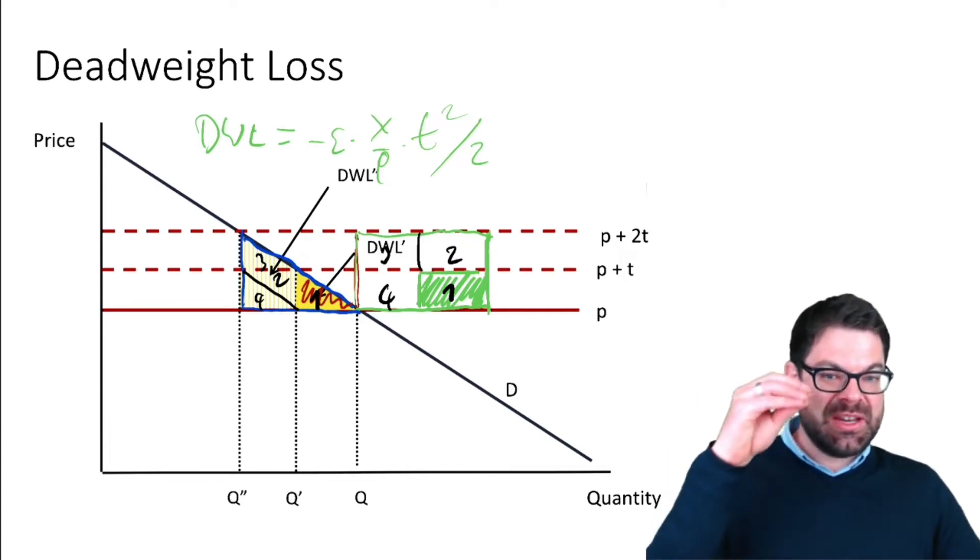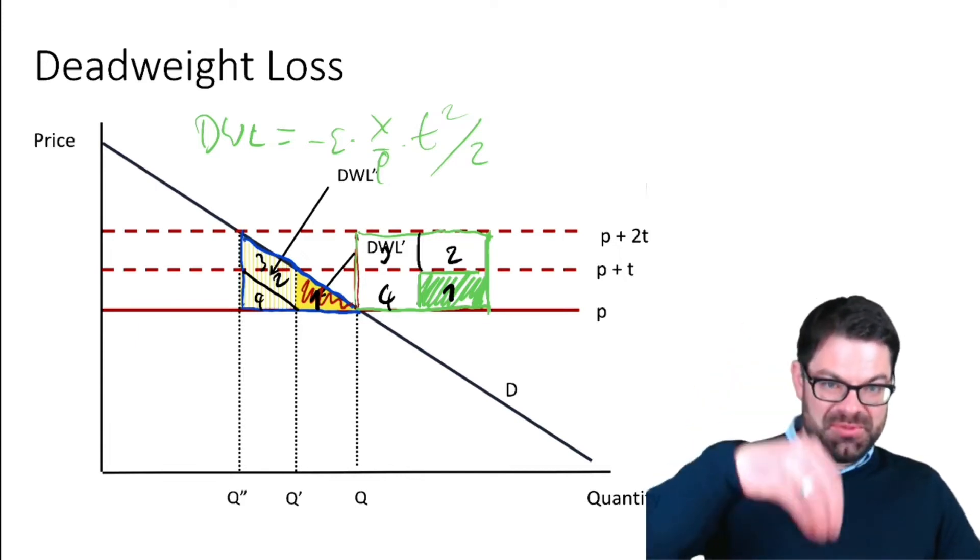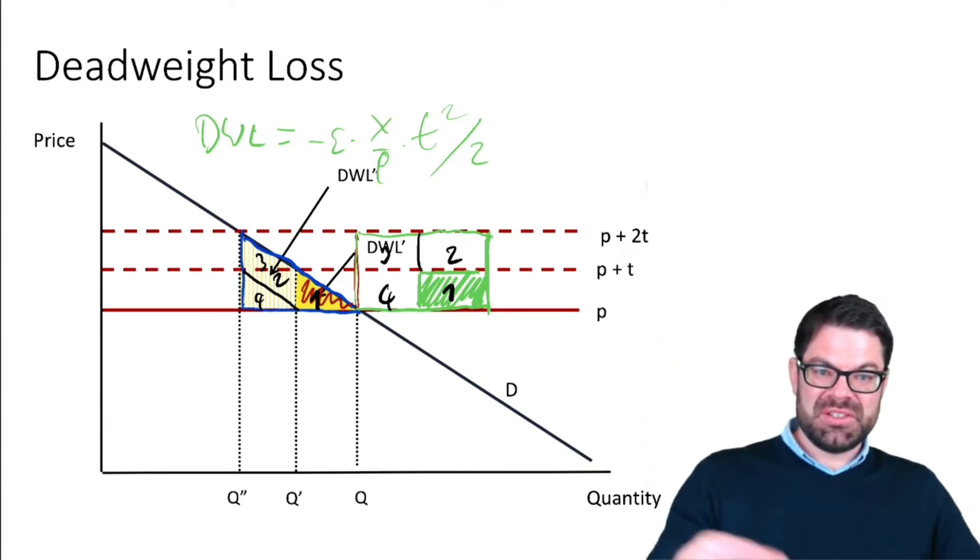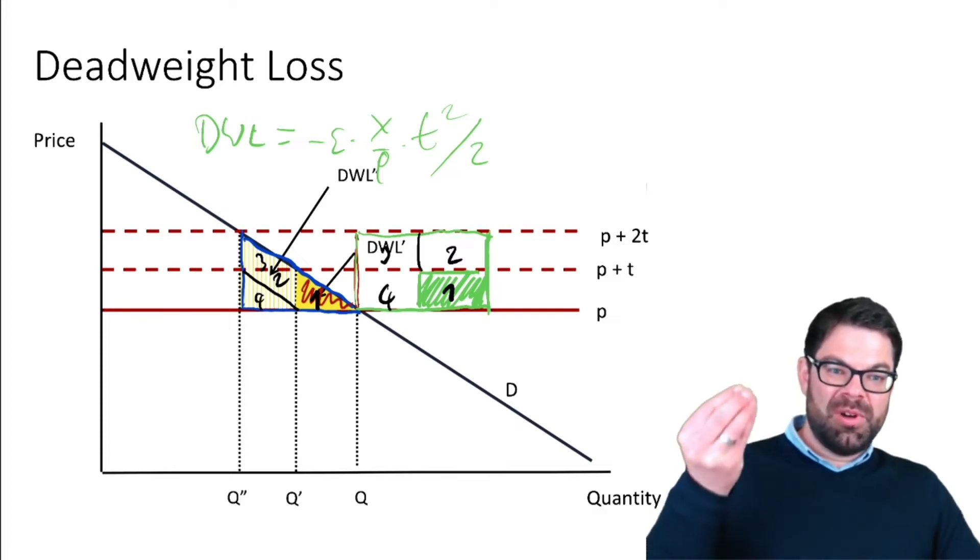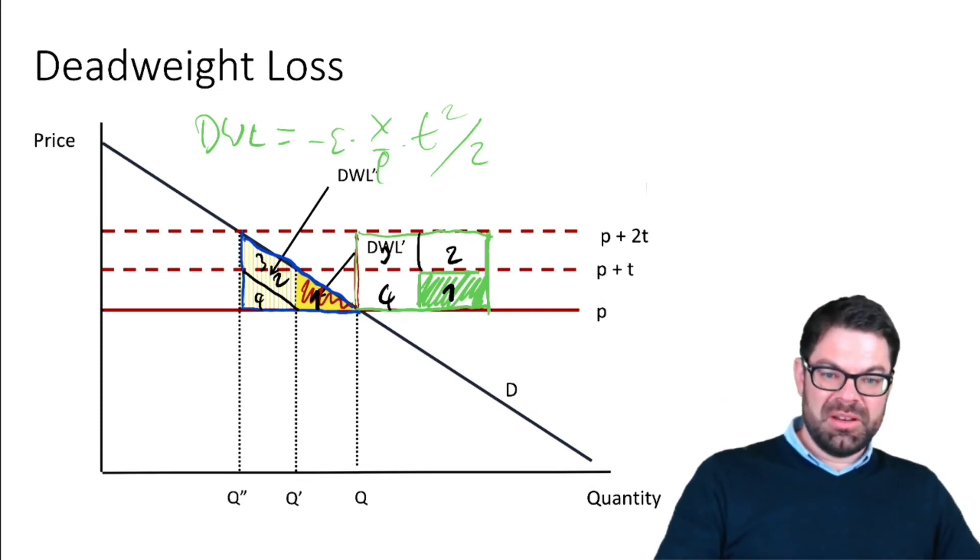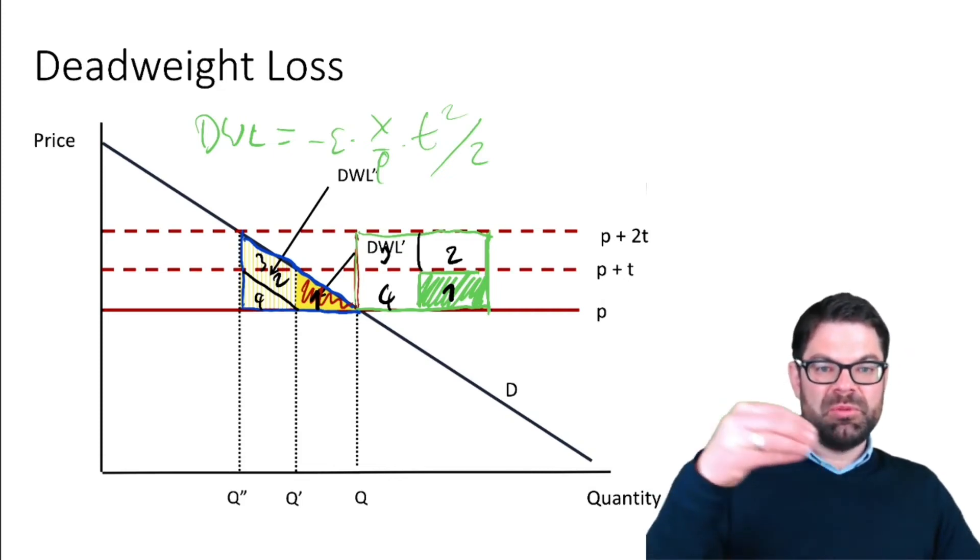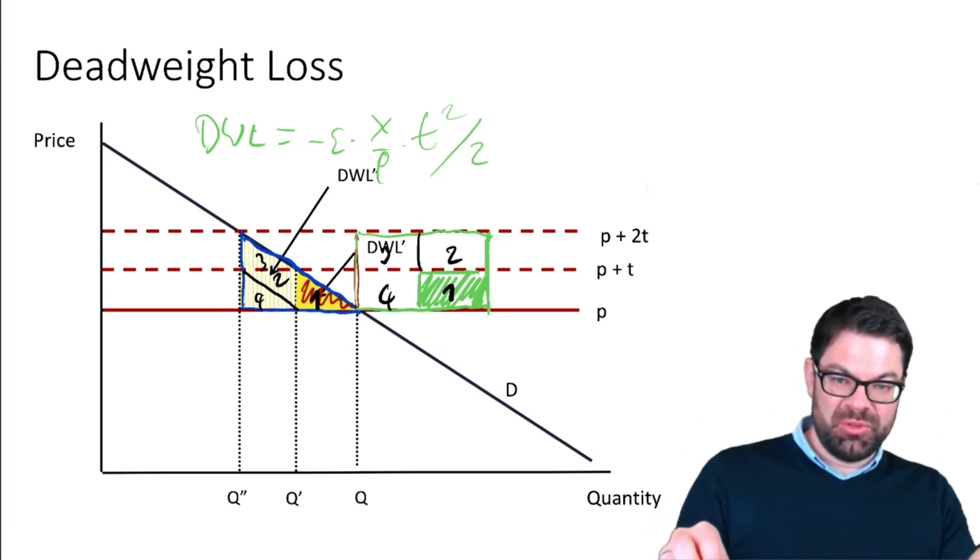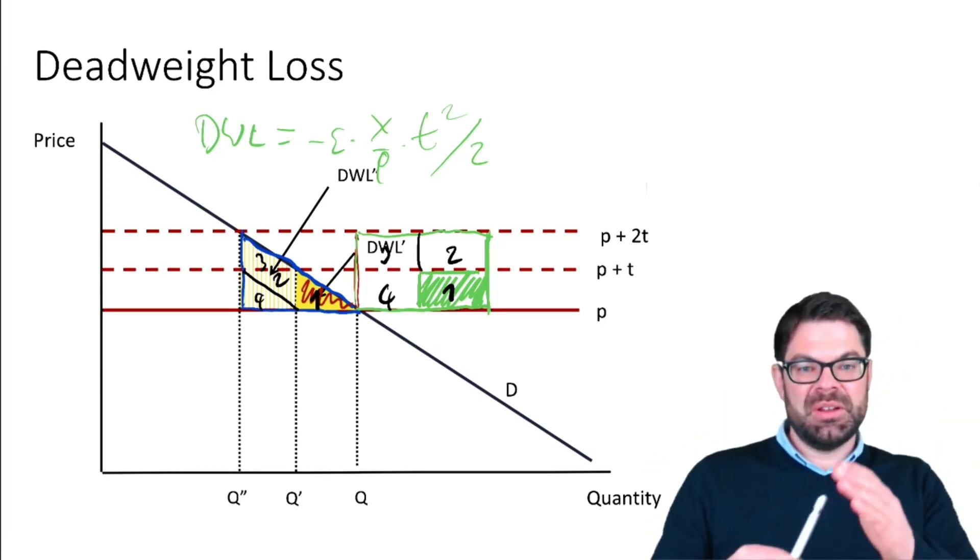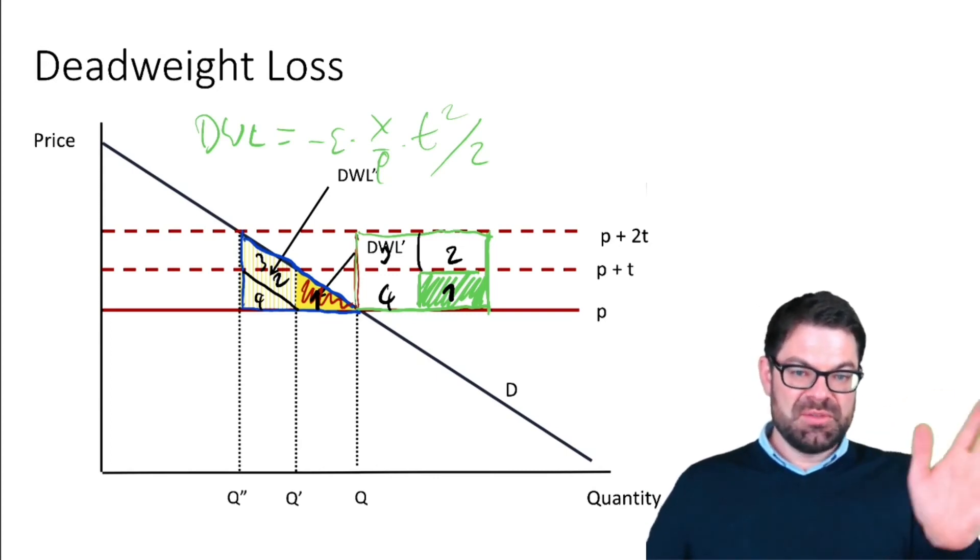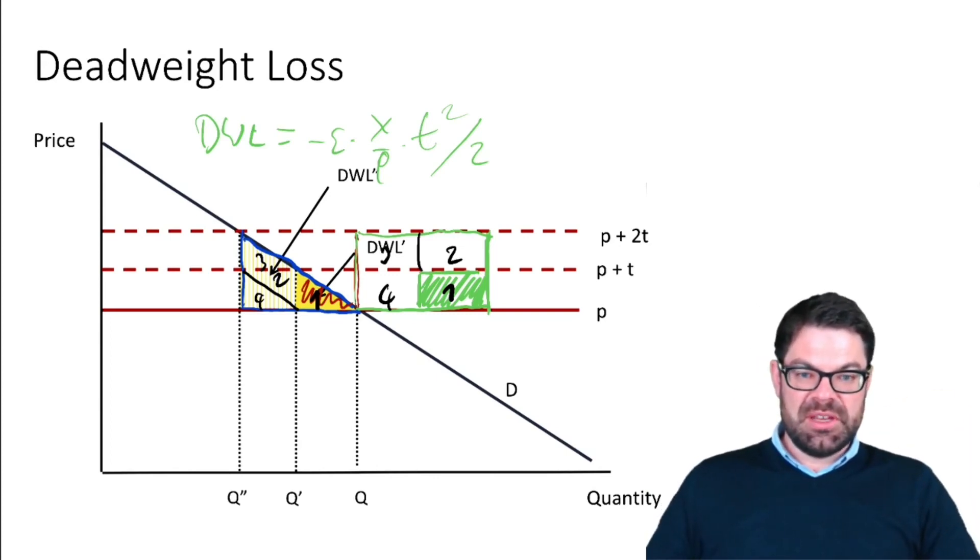Rather than having a very high tax on one good and none on another, we would probably rather spread it out and tax both goods. But then it also depends on the slope of the demand curve of both goods, and this is what we will see in the next videos.